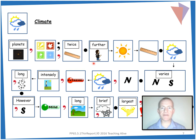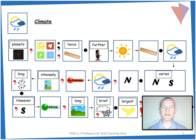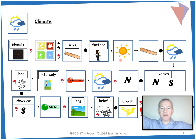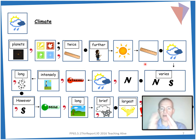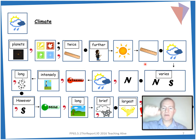This is due to the fact that Mars — eat a Mars bar — is further away — turn around — from the sun — pretend to be the sun. So further away from the sun, and takes longer — ruler gesture for longer — to orbit. Full stop.